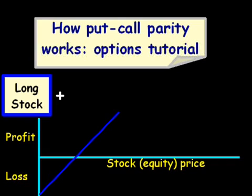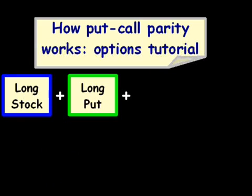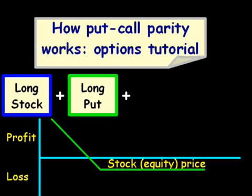Now, what we're trying to do in this case is we're trying to recreate a synthetic version of the Treasury bill through our arbitrage or through our equation here. So I've got long stock, and now we want to get rid of the downside — the loss on the left side of the chart. So what we're going to do is we're going to add a long put, and a long put looks something like this from a profit and loss diagram. What that will do is take away our potential loss on the stock side, so we don't have any downside.